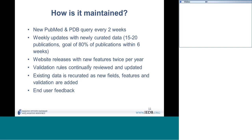The website gets new features at least twice per year, and validation rules are continually updated. As mentioned, for old data that was entered many years ago, if we add a new field or validation rule, we go back and apply it to the old data. We use user feedback to identify anything unusual or potentially erroneous — if an author contacts us with a concern, we're happy to hear that kind of feedback.